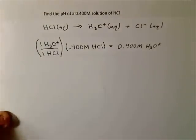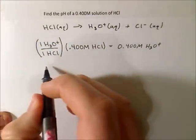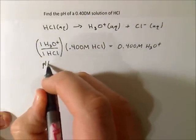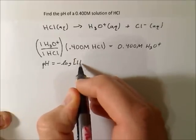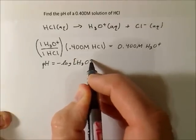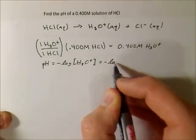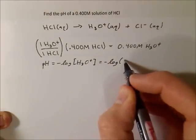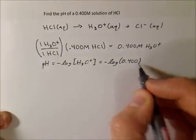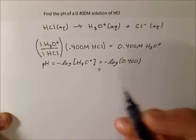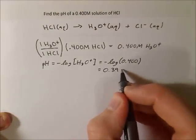So now we're ready to solve for the pH. And from the definition of pH, it's just equal to the negative log of H3O+. So now we can plug our numbers in, and when we calculate that all out, we should get 0.399.